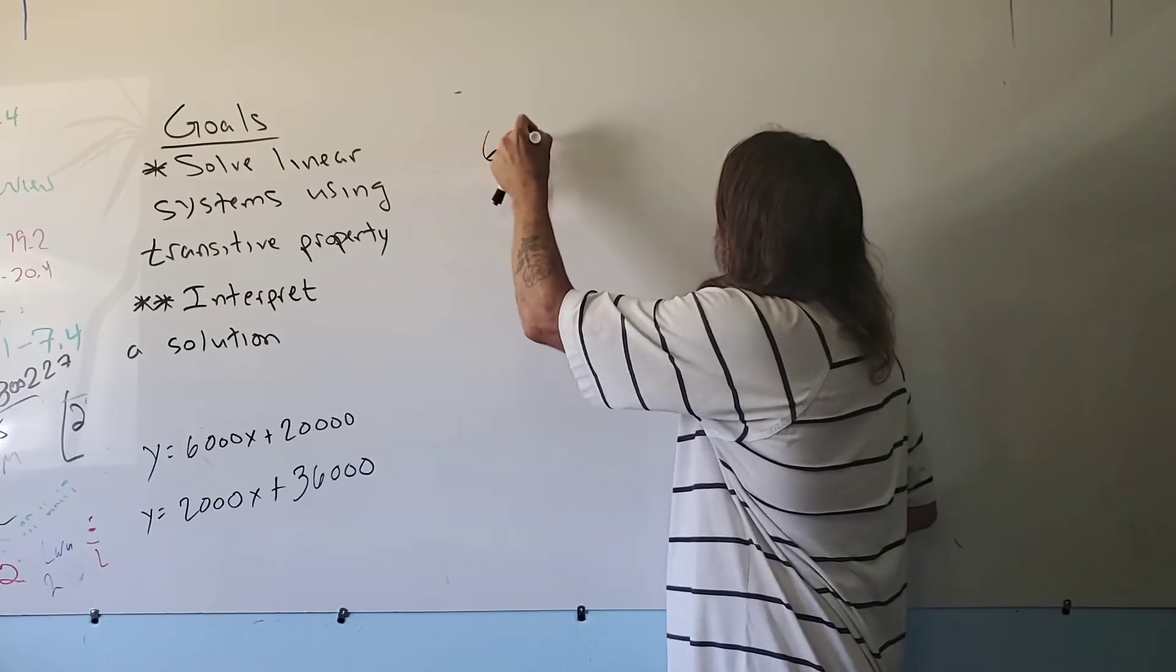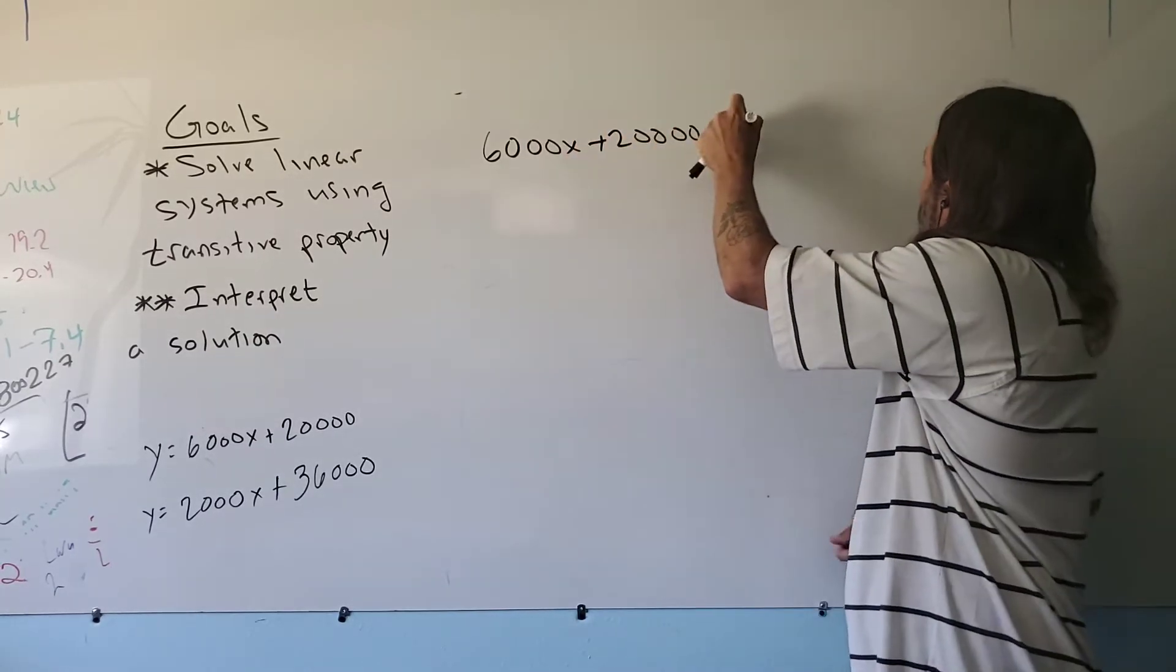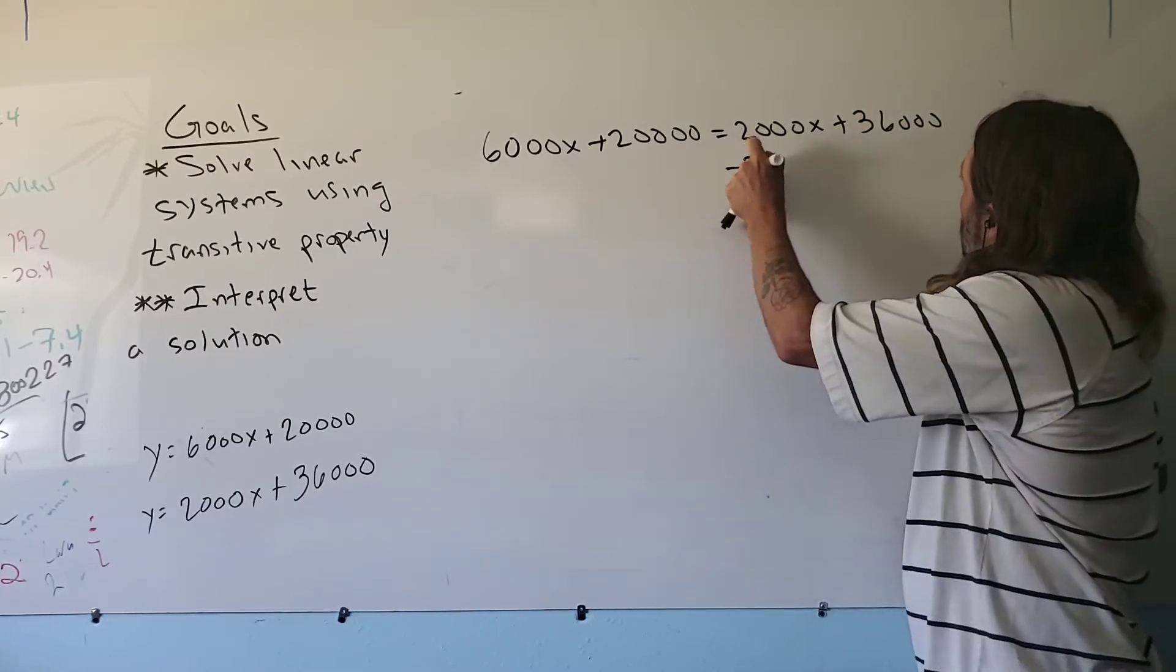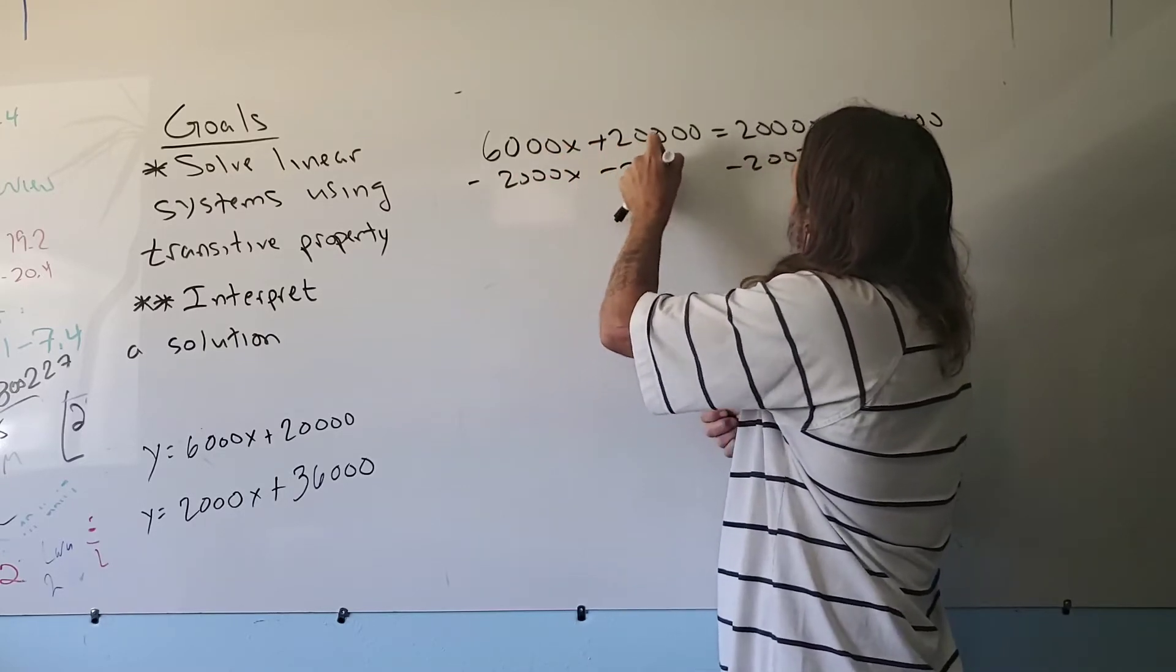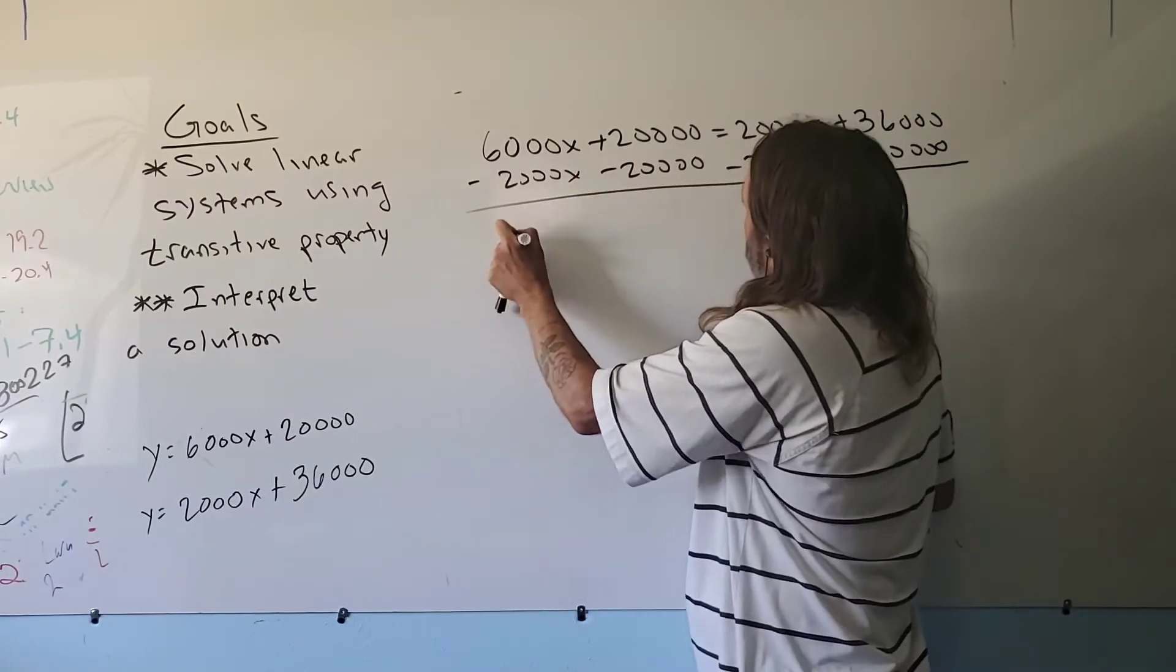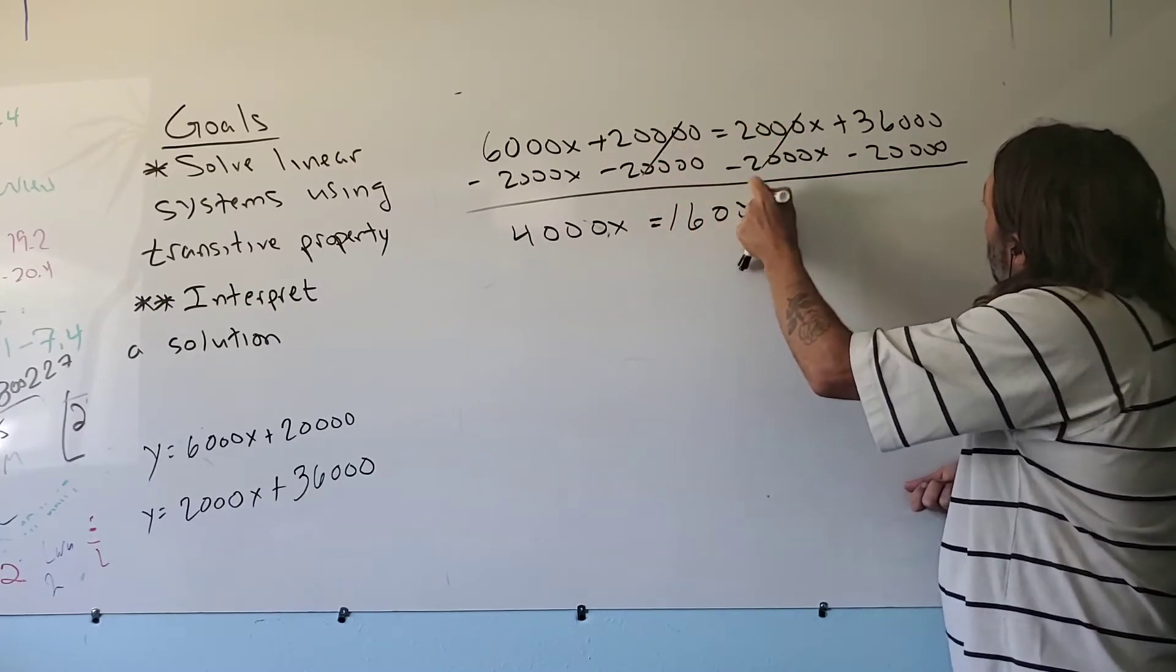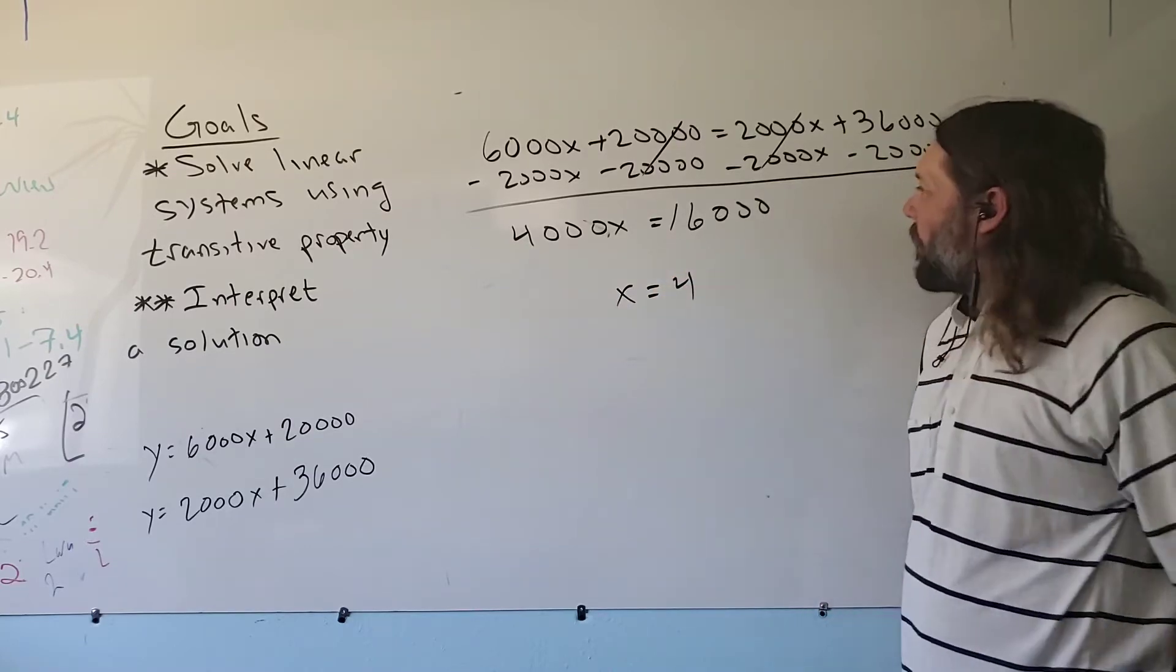So 6,000 X plus 20,000 to start equals 2,000 X plus 36,000. Let's get all the X's to one side. I'm going to subtract the 2,000 X to both sides. I'm also going to subtract the 20,000 to both sides. We're left with 4,000 X. That's equal to 16,000. You need 4,000 to get to 16,000, right? So X equals 4. So at four years, both jobs will pay the same.